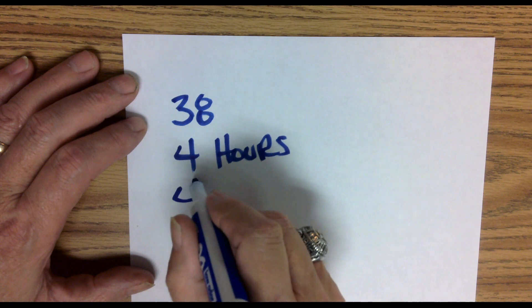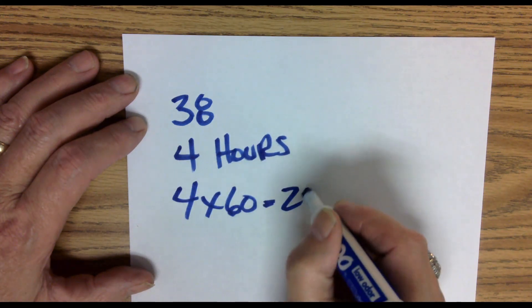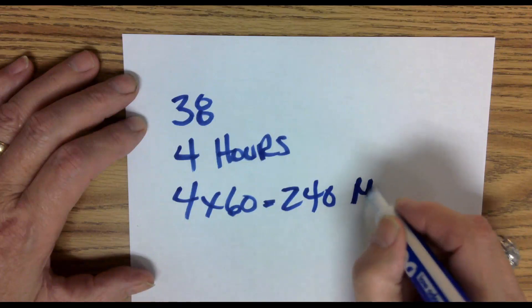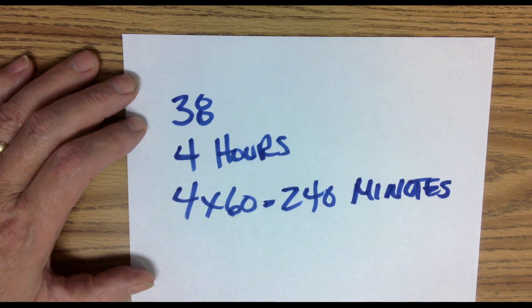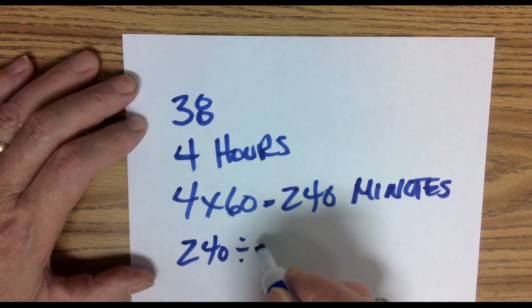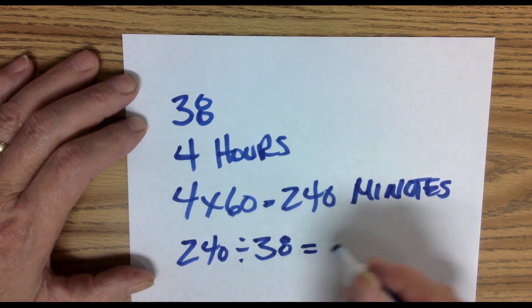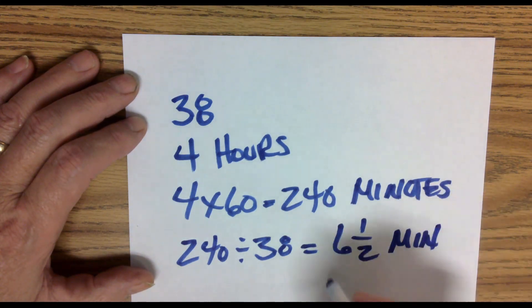So we know there's 60 minutes in an hour. So 4 times 60 is equal to 240 minutes. Now if we take 240 minutes and divide it by 38, assuming it's 38, we get 6½ minutes per question.